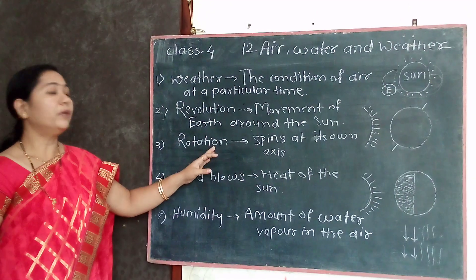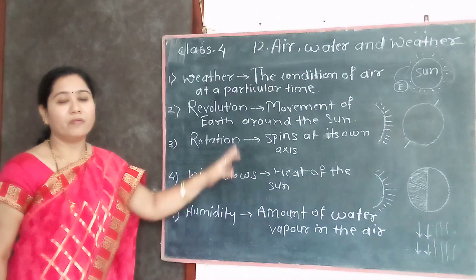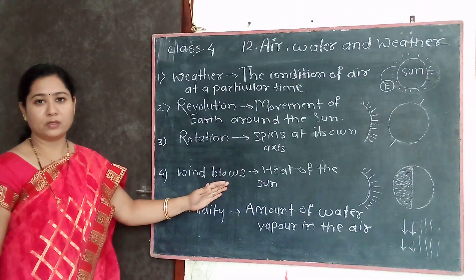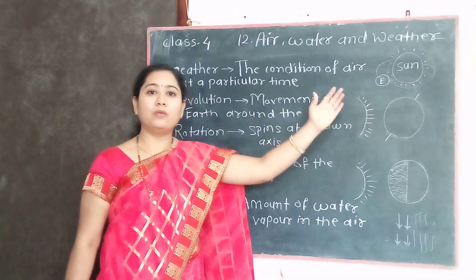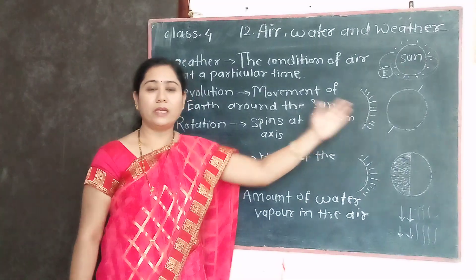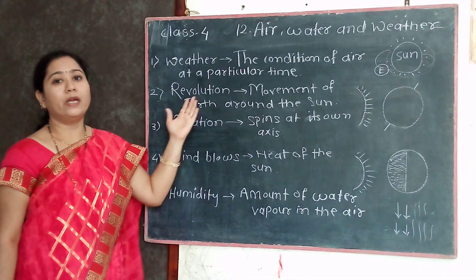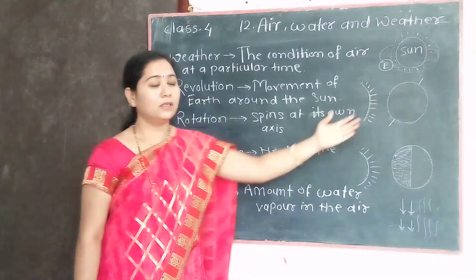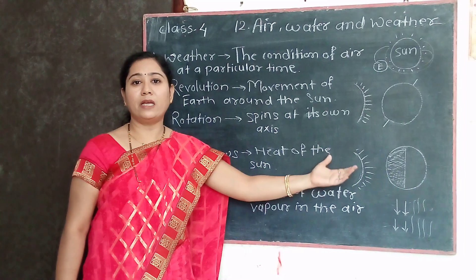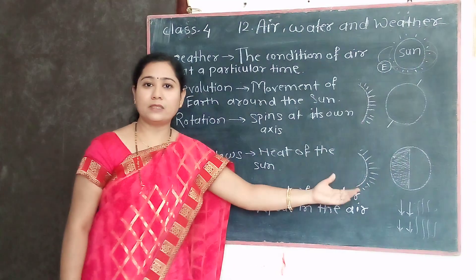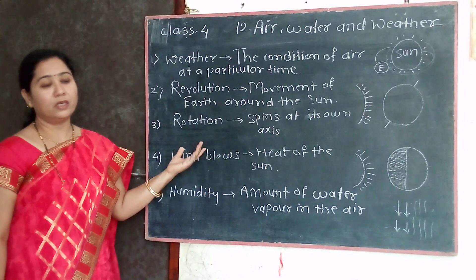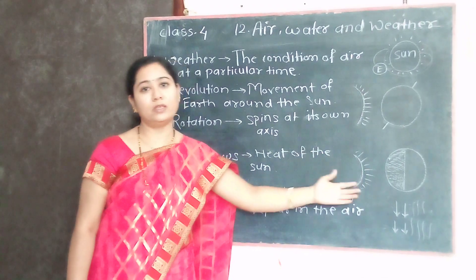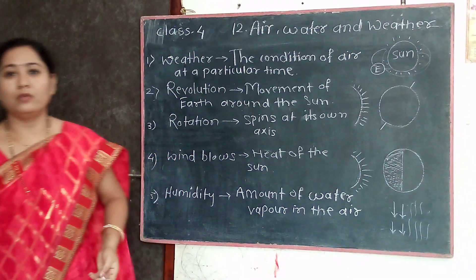To summarize: because of the sun, weather changes and wind blows. Our earth moves around the sun — that is called revolution, and revolution causes changes in seasons. Our earth spins at its own axis — that is called rotation, and rotation causes day and night on the earth.